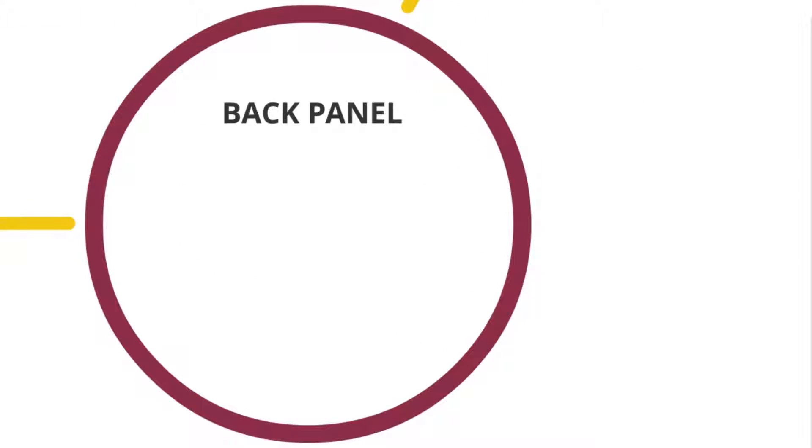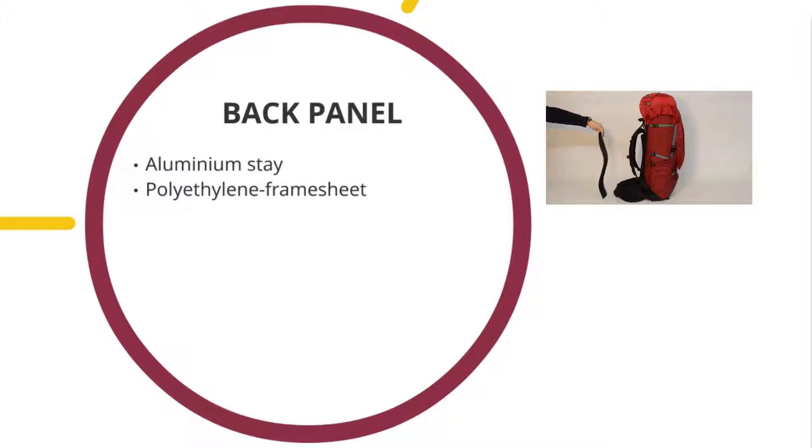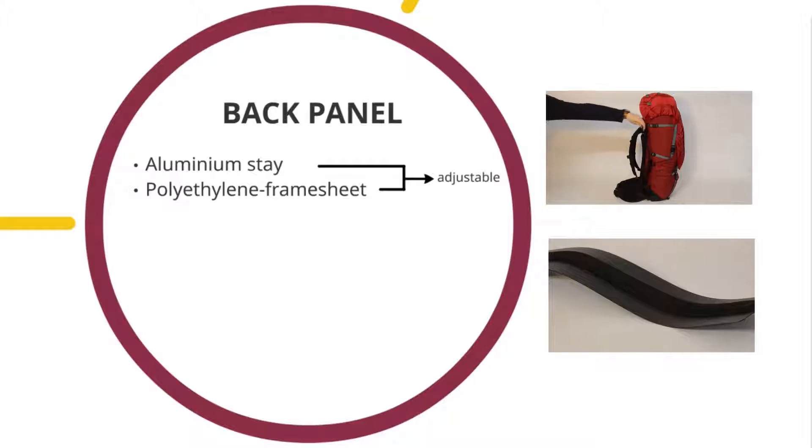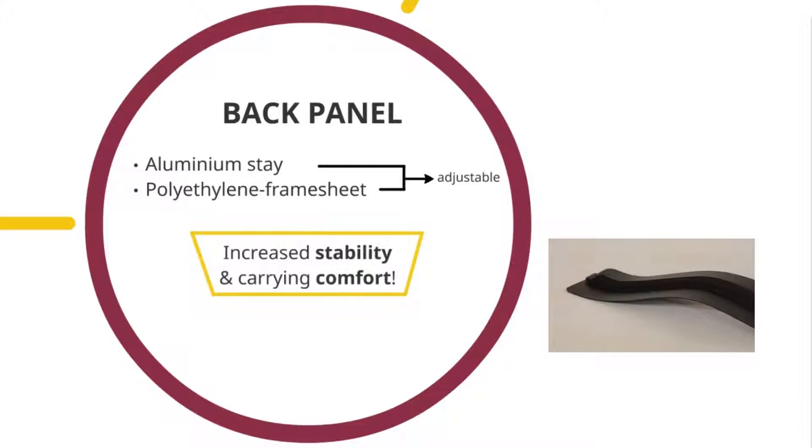Our packs use different suspension systems in regards of their use. In all of them we make use of aluminum stays and polyethylene frame sheets, which again are shaped to fit your body in order to increase stability and carrying comfort.